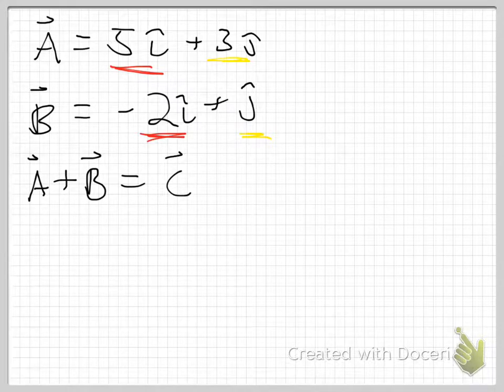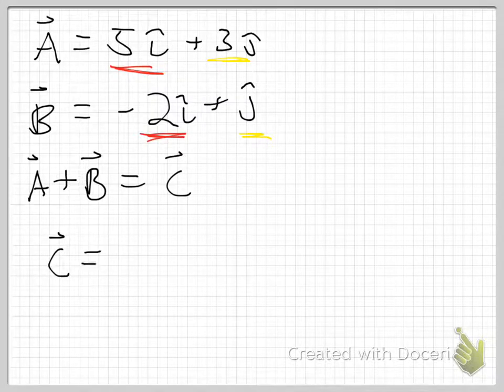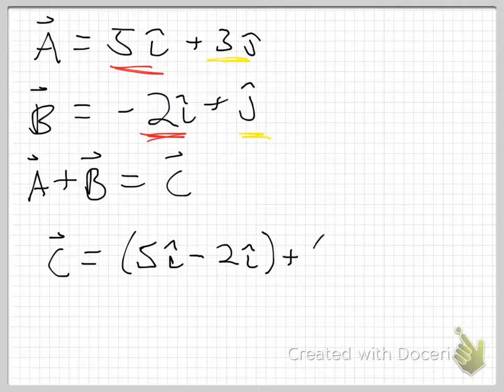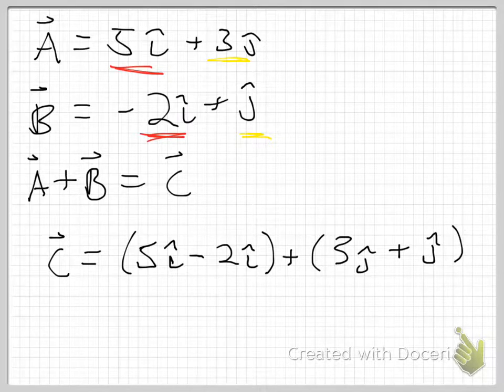So I can say that vector C, the resultant, is equal to (5î - 2î) + (3ĵ + 1ĵ). I can probably skip the step of factoring out the i from the first parentheses, factoring out the j from the second parentheses, and just adding the coefficients. I think I can skip that step. If not, I would encourage you to do it. Just write this down, take out the i's, you get (5 - 2) times i-hat, et cetera.